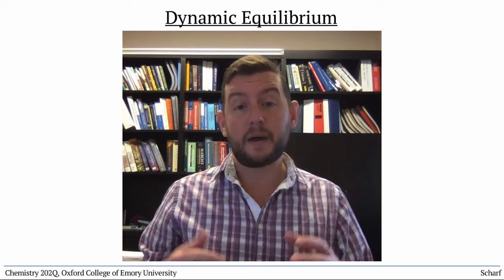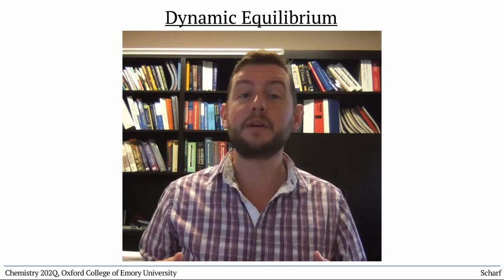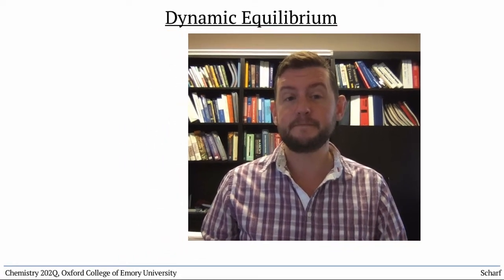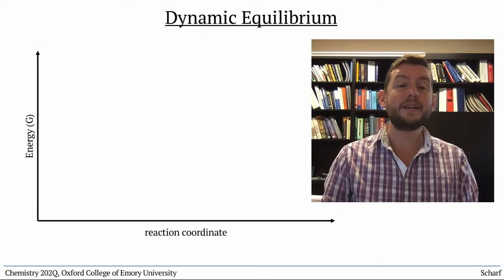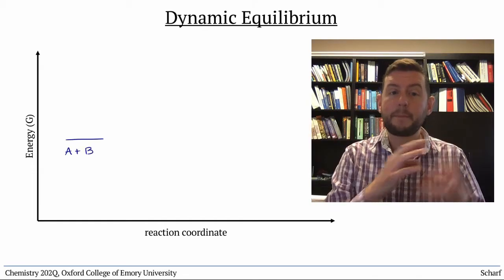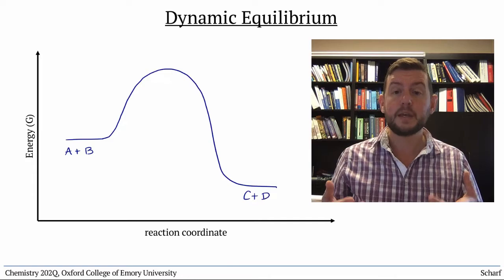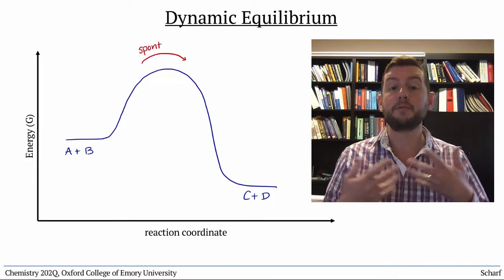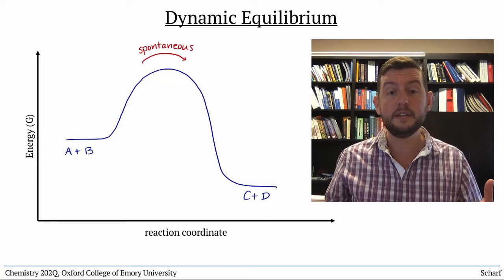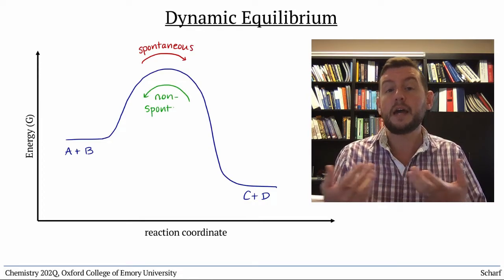Of course, spontaneous reactions with negative delta G values happen a lot more often. When we're thinking about gazillions of molecules flying around in a container, always moving, bumping into each other, lots of reactions are happening. Spontaneous reactions happen relatively quickly and often, and non-spontaneous reactions happen more slowly and less often.